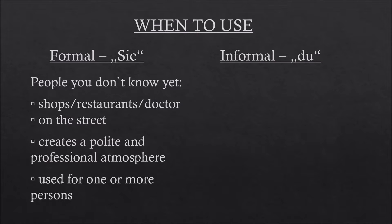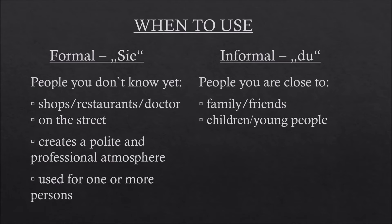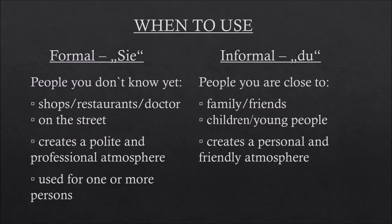Anna used du when she talked to David because he's a young man — maybe he was even still going to school — so she said du spontaneously, because she felt that a formal way would be inappropriate. If she had talked to an unknown person of middle age, she certainly would have used Sie too. So du is used when you talk to people you are close to, like friends or family, but also with young people and children. It creates a personal and friendly atmosphere. Its plural form — 'you guys' in English — is Ihr.